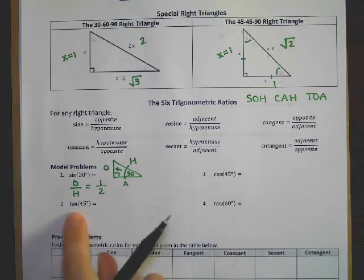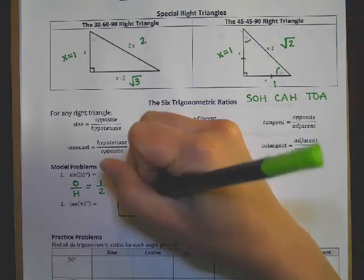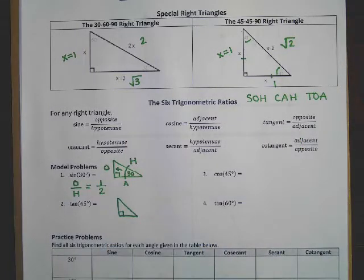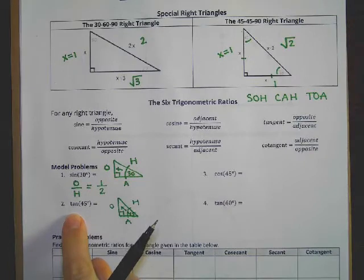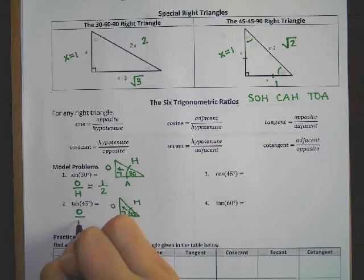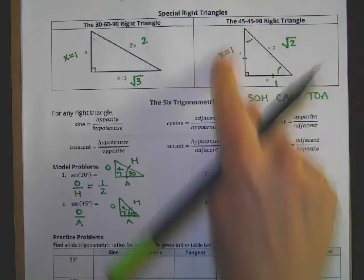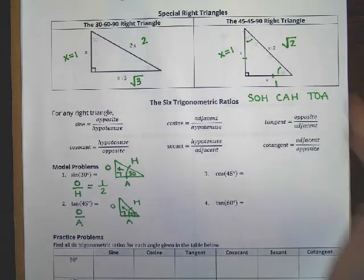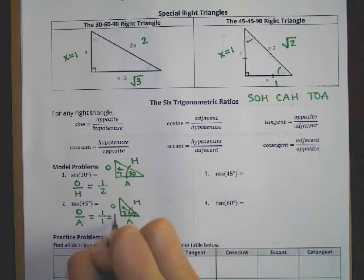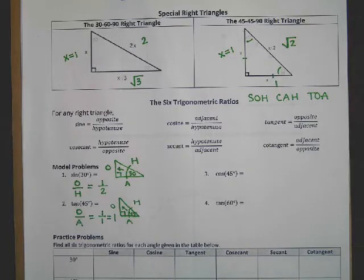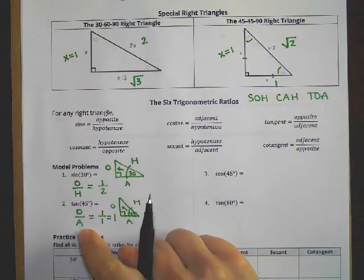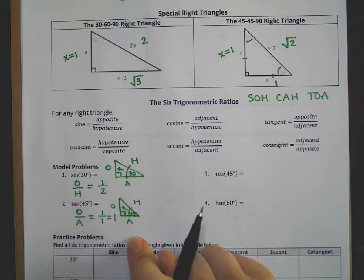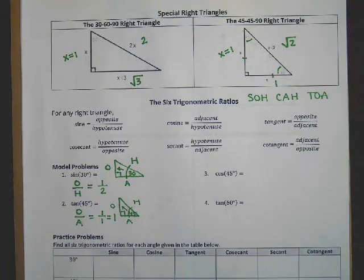Now let's find the tangent of 45. Drawing the 45-45-90 triangle, it doesn't matter which 45 degree angle we look at since they're both the same, but we'll pick one. Tangent is TOA — opposite over adjacent. Using x equals 1, that gives us 1 over 1, which equals 1. Even if the legs were 10 and the hypotenuse 10 times the square root of 2, opposite over adjacent would be 10 over 10, which is still 1. The tangent of 45 degrees is always 1.